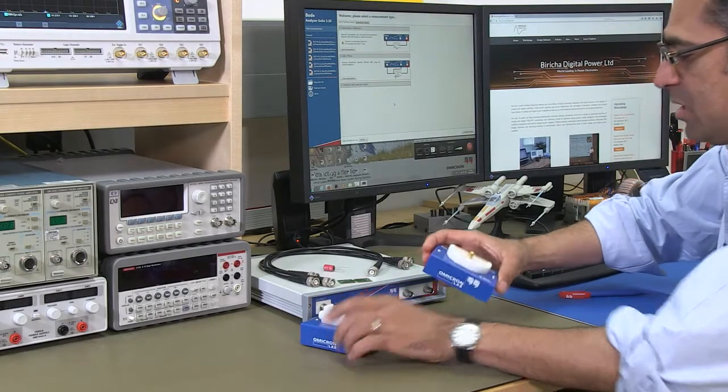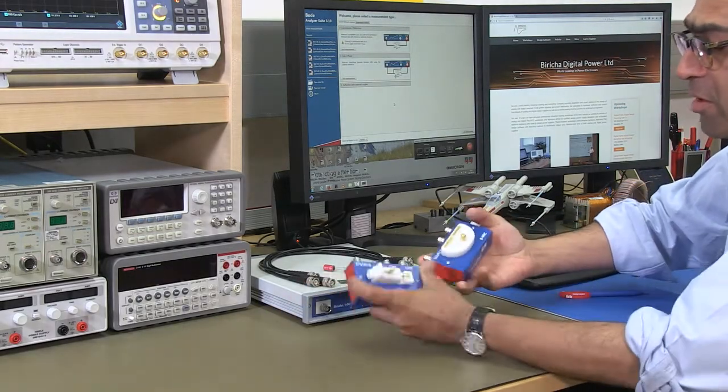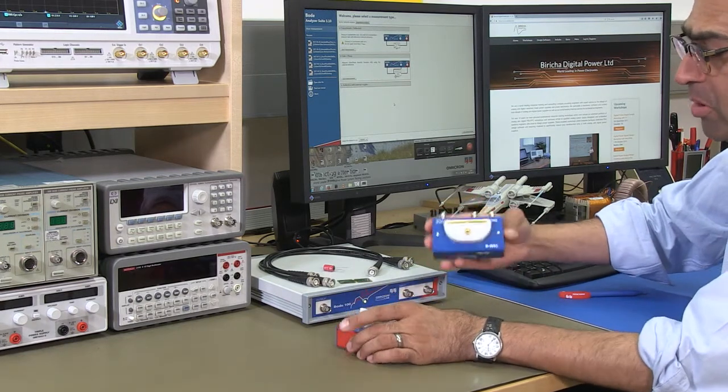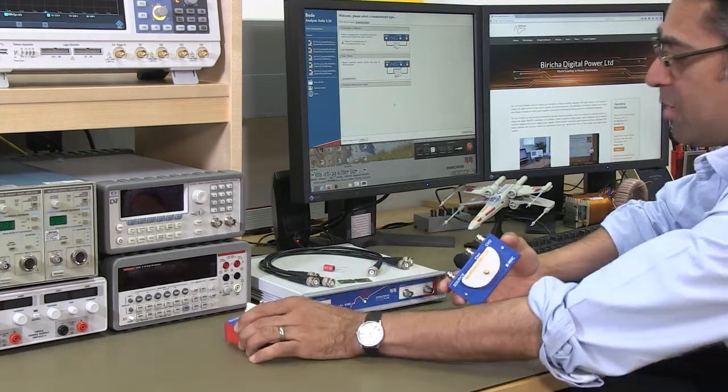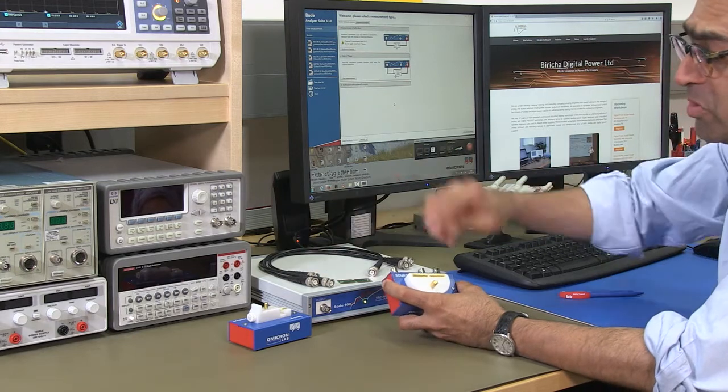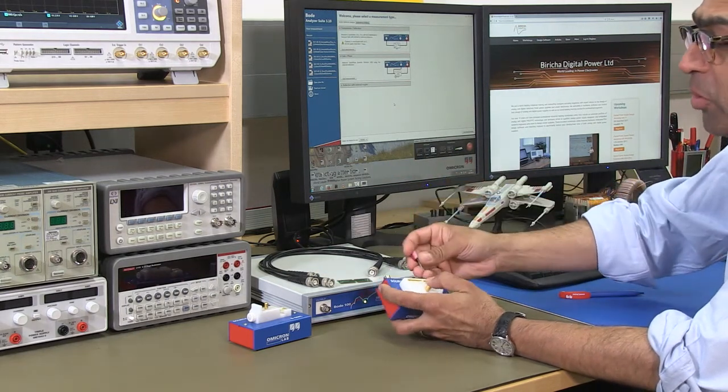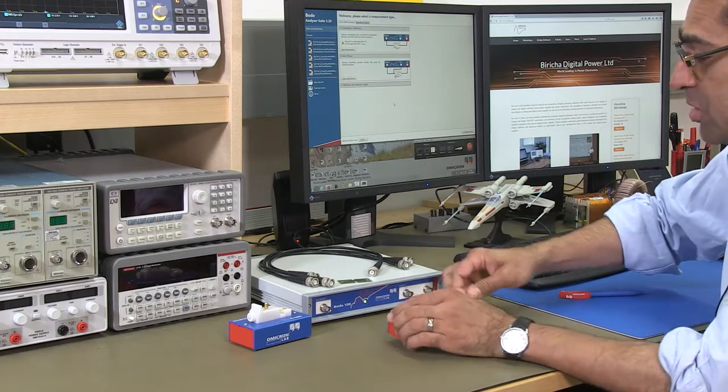First, we're going to connect up the test fixtures. There are two: one for through-hole components and one for surface mount. I have got a through-hole component at the moment, so I'm going to go through the through-hole measurement, but later on we will do a surface mount.